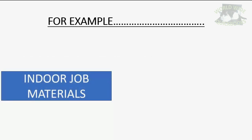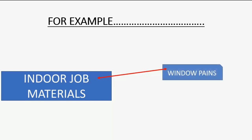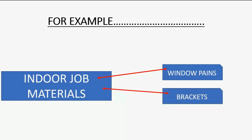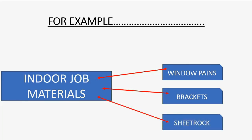For example, we have an expense account called indoor job materials. We could bill the client for just indoor job materials, but it would be better if we listed the specific things that count as indoor job materials, like window panes and brackets and sheetrock and so on. So indoor job materials is the account, and if we broke it up into identifiable items and listed the items themselves and the quantity on the invoice, the client would have a better sense of exactly what they're being billed for in the way of reimbursable expenses for their job.